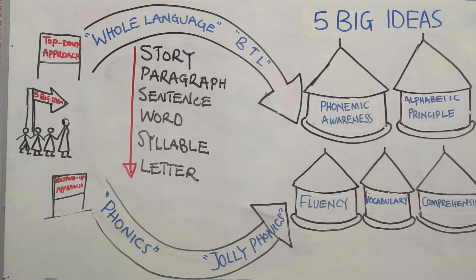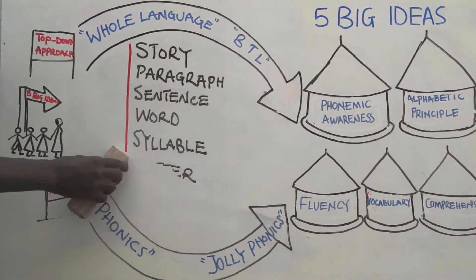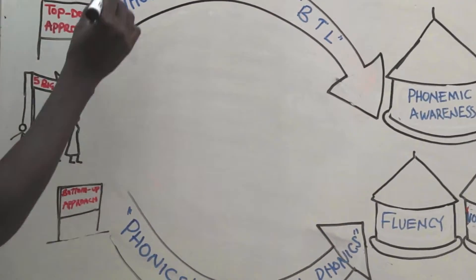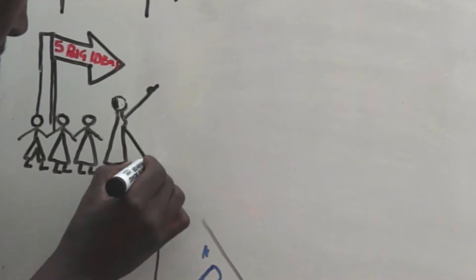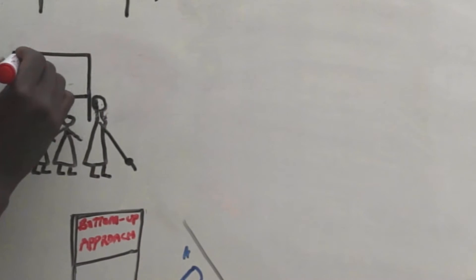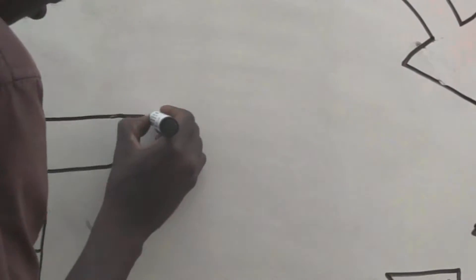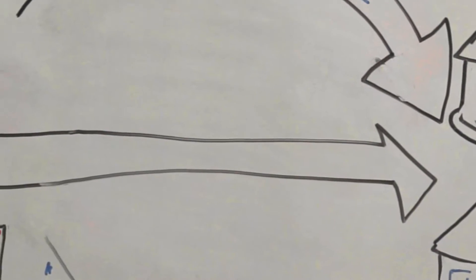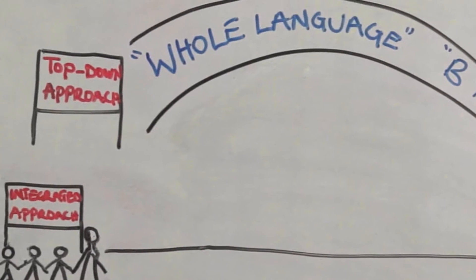At MangoTree, we saw the benefits in both these approaches, and so we decided to include both top-down and bottom-up approaches in our literacy lessons every day. We're not alone. Many others have decided to also combine approaches. So a third path has emerged. It goes by many names, but we call it the integrated approach.